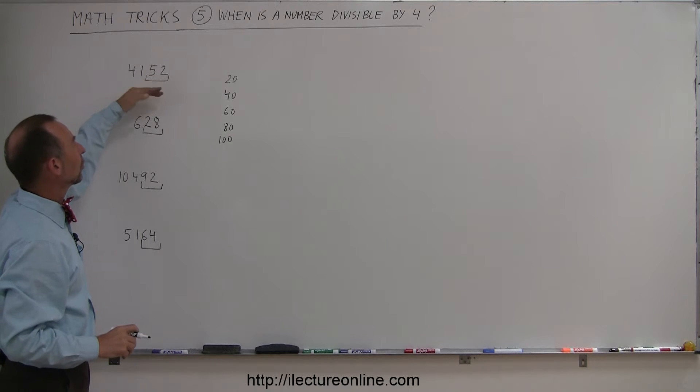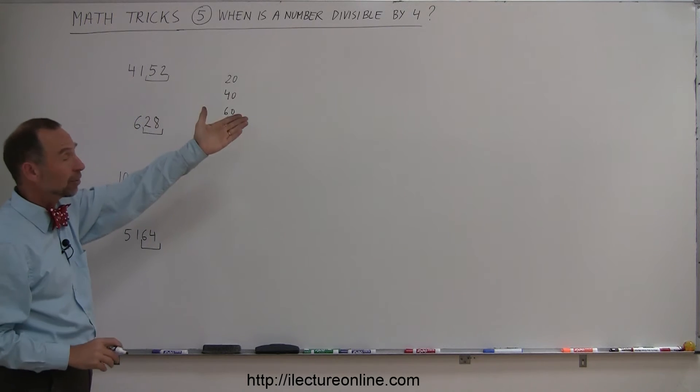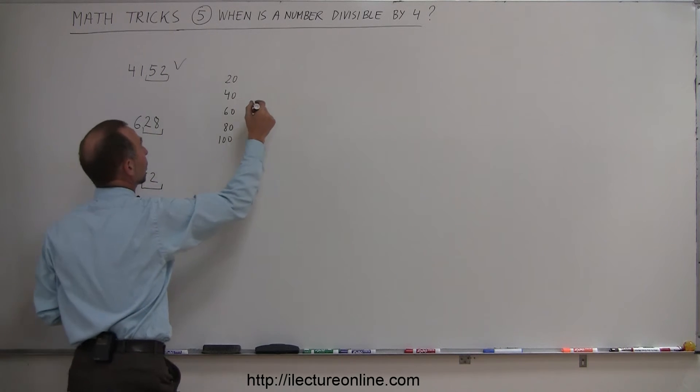Let's say 52, the biggest number of these that is below 52 is 40. So the difference between 52 and 40 is 12, and 12 is divisible by 4, so therefore this number is divisible by 4.